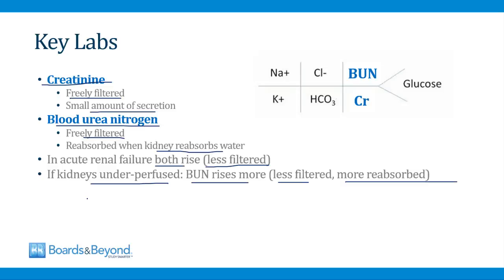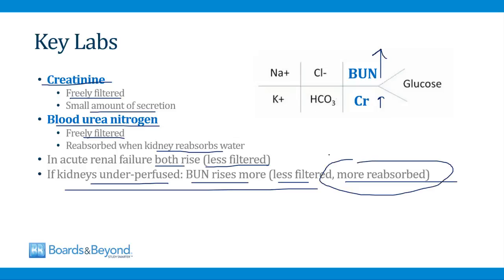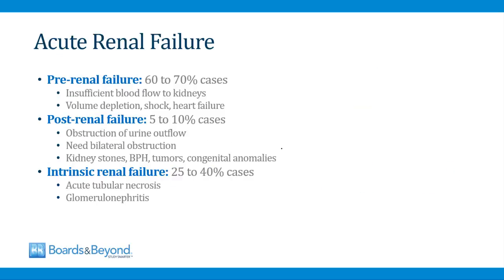The most important thing to understand about acute renal failure for your boards and for your clinical rotations is how to figure out what is causing it. You can basically break down the causes into three categories. The first category is called pre-renal failure, and this is the majority of cases — almost three-quarters of cases of acute renal failure are due to pre-renal failure. Pre-renal failure is caused by insufficient blood flow to the kidneys, which could be because of volume depletion, shock, or heart failure.